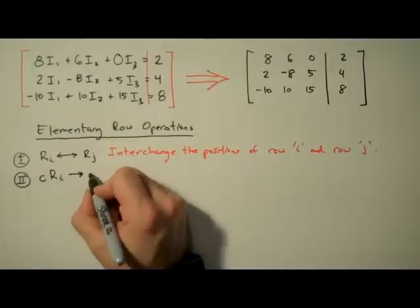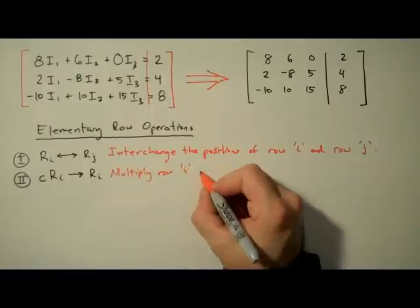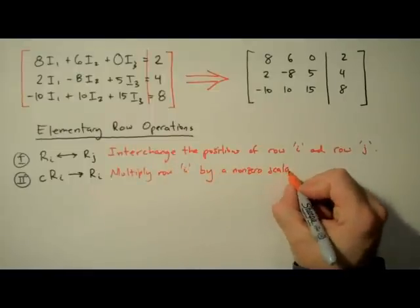Next we have row multiplication, which is where we multiply row i by a non-zero scalar, creating a new row i. A little trickier.